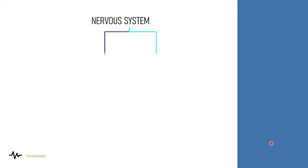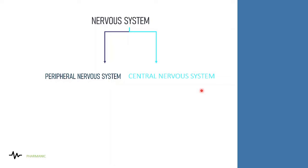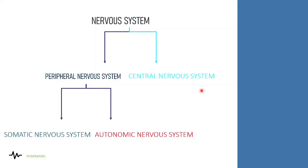The nervous system is basically divided into two main sub-parts: the peripheral nervous system and the central nervous system. The central nervous system consists of the brain and spinal cord. Every other organ present in our periphery comes under the peripheral nervous system, which is further divided into the somatic nervous system and the autonomic nervous system.